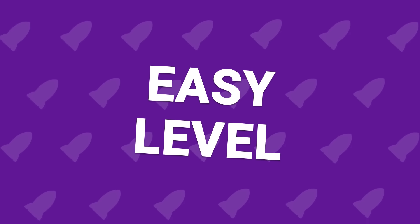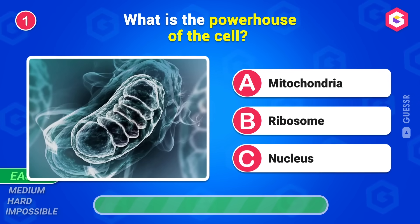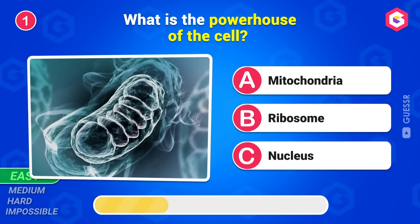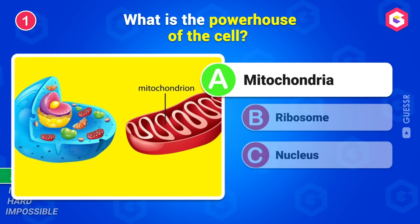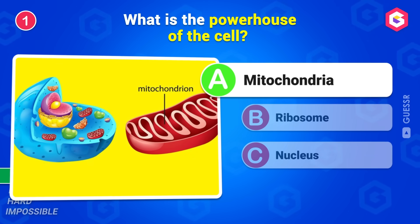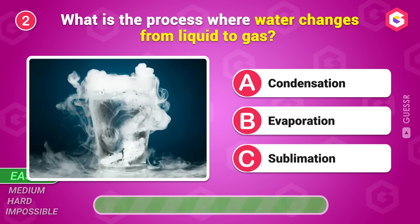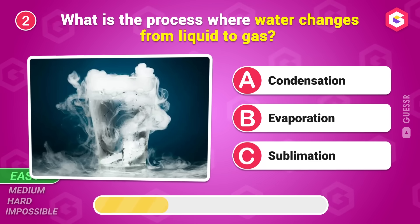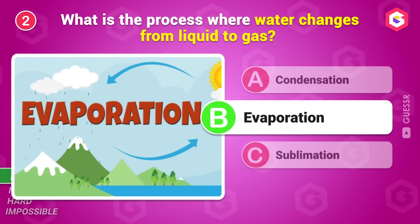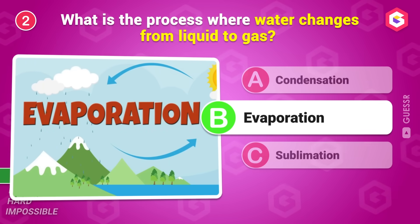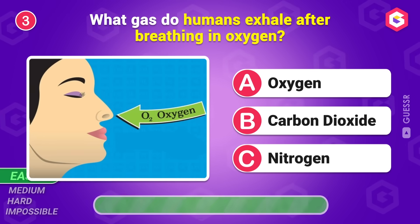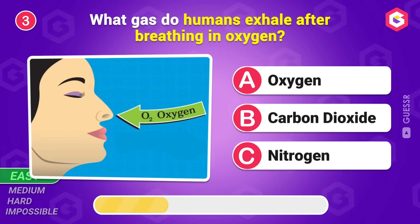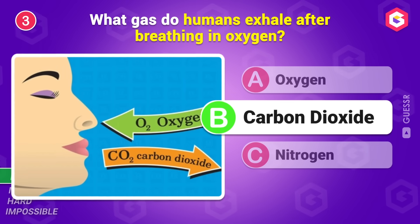Easy Level. What is the powerhouse of the cell? Mitochondria. What is the process where water changes from liquid to gas? Evaporation. What gas do humans exhale after breathing in oxygen? Carbon dioxide.